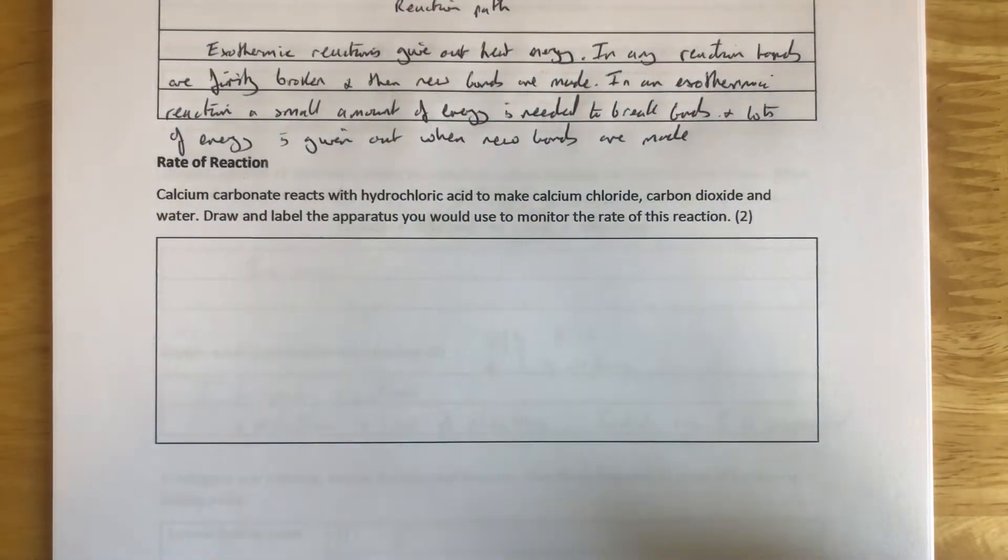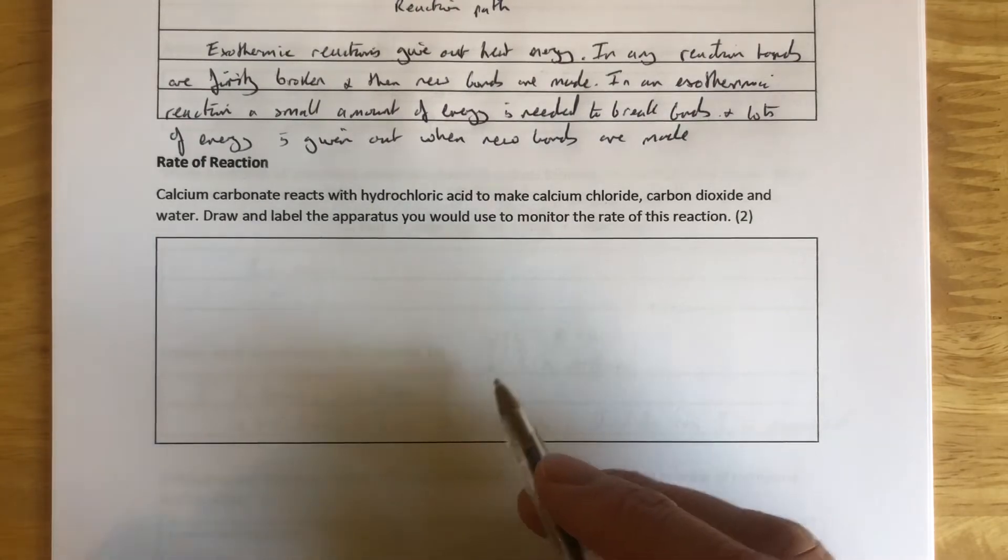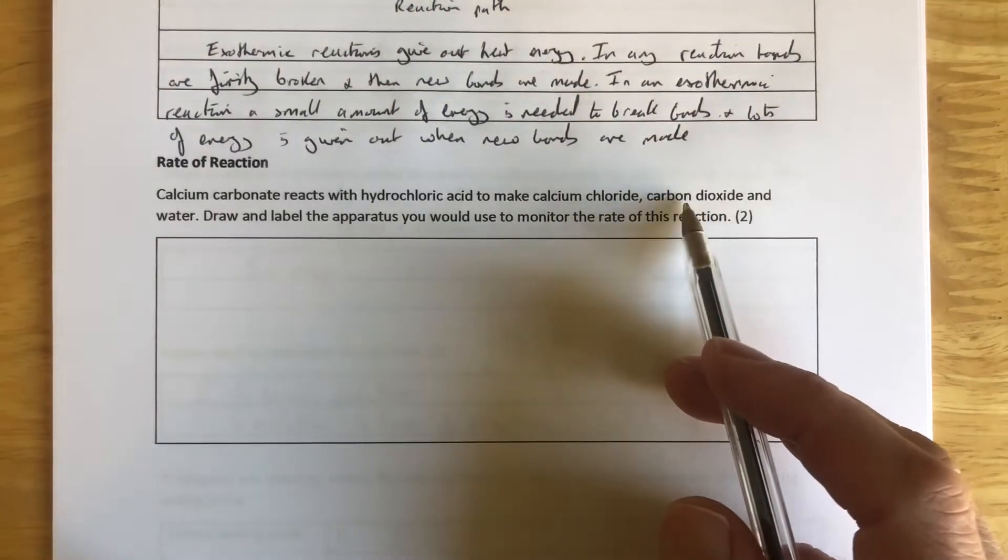Now we can do that one of two ways. We can put it on a top pan balance because it's giving off a gas, so the mass will be dropping. So we could draw that on a top pan balance.